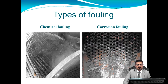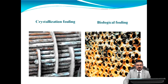Types of fouling include particulate fouling, corrosion and chemical fouling, and biological fouling. Each type of fouling increases the overall thermal resistance and reduces the effective heat transfer in the exchanger.